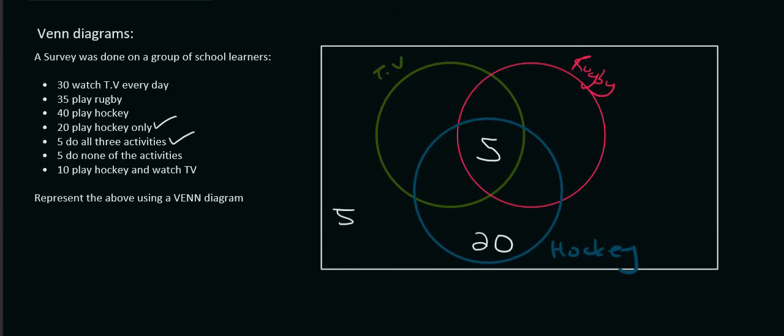Then 10 play hockey and watch TV. So 10 people play hockey and watch TV at the same time. So where does this hockey circle and the TV circle overlap? Well, if you had to look at the TV circle and the hockey circle, they would overlap in this part over here. Now, they've told us that that part should add up to 10. But because we already have a 5 here, then 10 minus 5 is 5. So we can put a 5 over there.